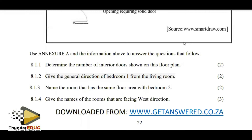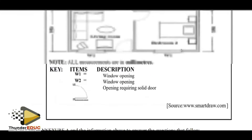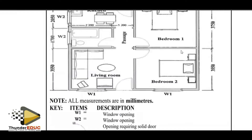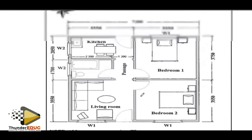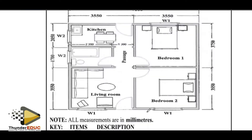Determine the number of interior doors shown on the floor plan. Interior means those that are inside. We count: one, two, three. So we have three interior doors.